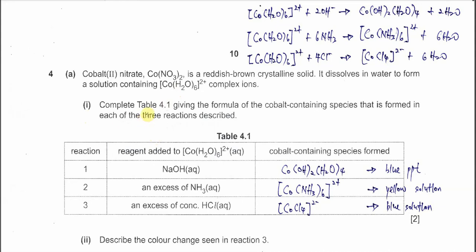Part one: complete table 4.1 giving the formula of the cobalt-containing species for each reaction. For reaction one, when the complex ion reacts with sodium hydroxide, it follows the first equation, forming a cobalt hydroxide precipitate. The formula is cobalt with two hydroxide and four H₂O, because only two H₂O molecules are substituted by hydroxide, forming the precipitate, with two H₂O removed. The cobalt-containing species is this one.